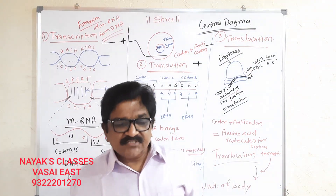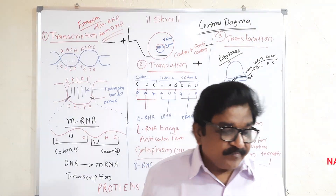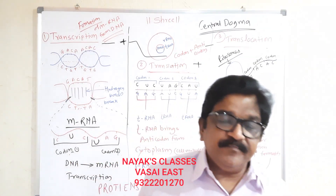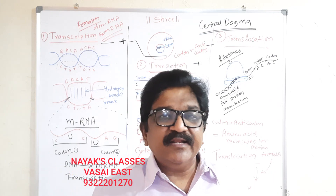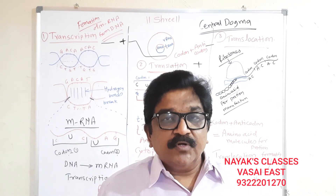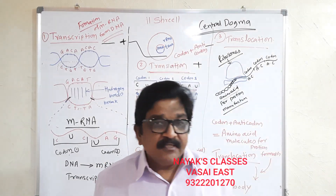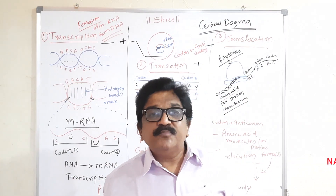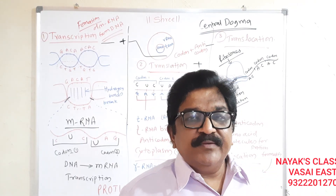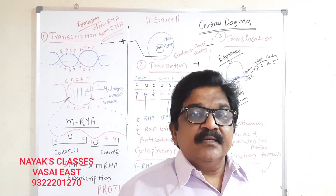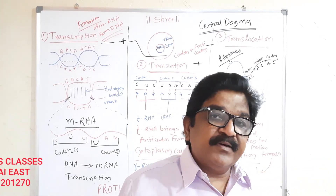Hello students, we are starting today the first lesson of Science 2: Heredity and Evolution. What is heredity? Heredity is the transfer of similarities from parents to their children. In science, children are called offspring. Human beings produce human beings, elephants produce elephants, whales produce whales, amoeba produces amoeba.